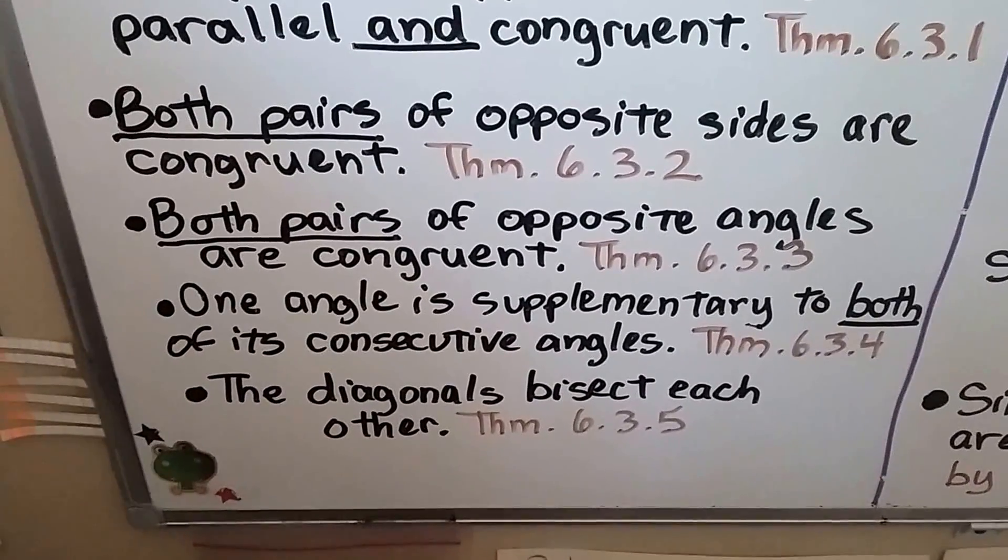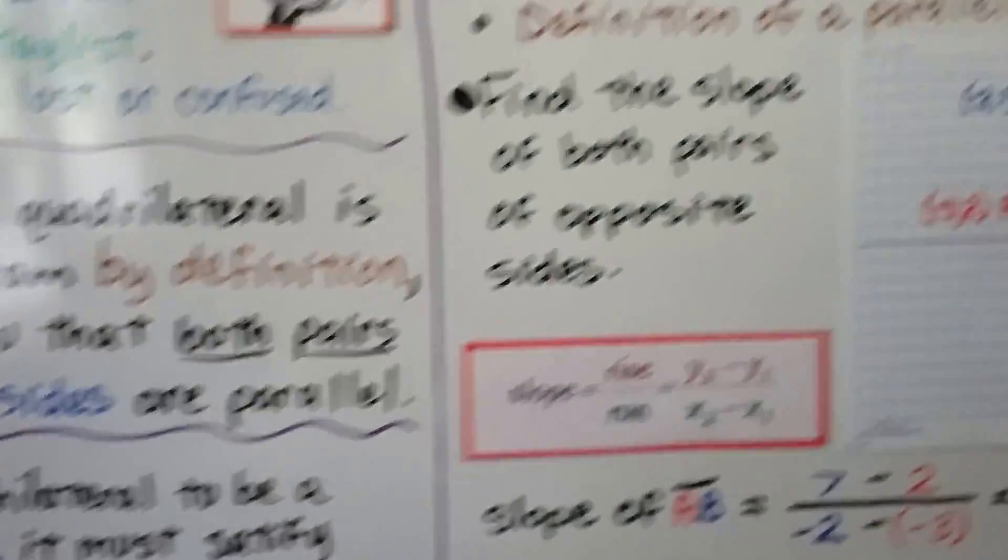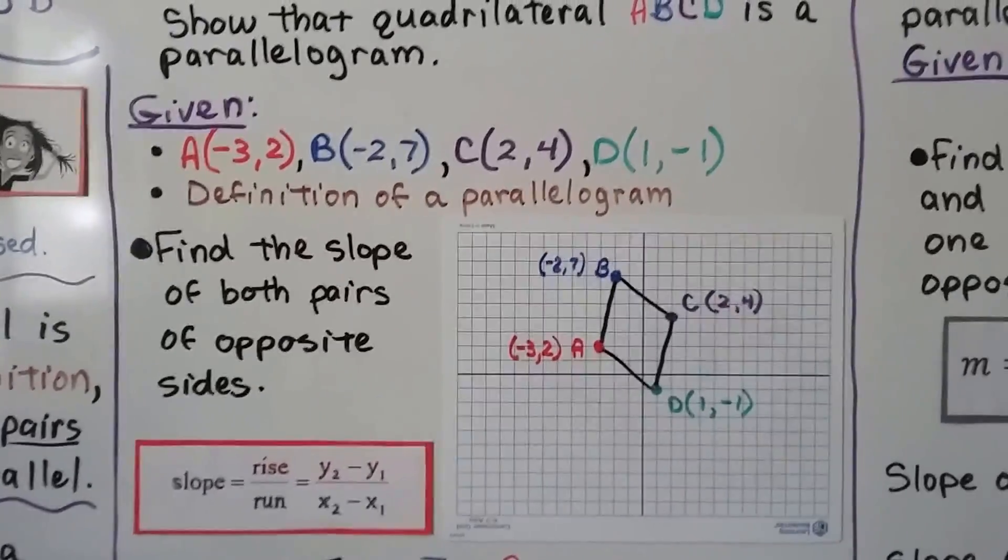And finally, the diagonals bisect each other—that was the fifth theorem. So if you didn't see the previous video, 6.3a, you should really watch it because I don't want you to become confused.